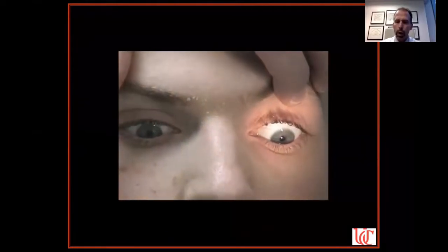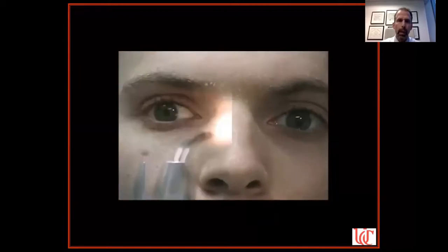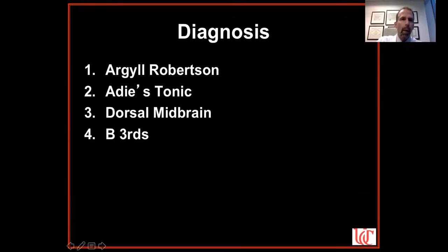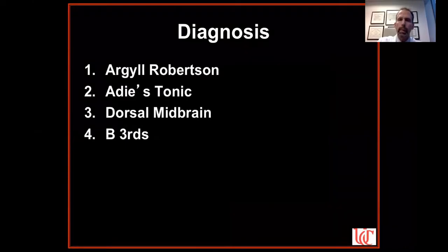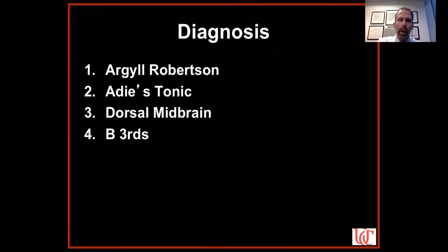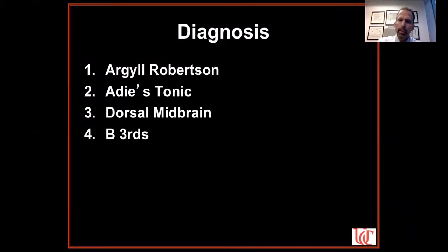This constellation of findings is our second polling slide. Does this represent Argyll-Robertson pupil? Adie's tonic pupil? A problem in the dorsal midbrain? Or bilateral third nerve palsies? Two-thirds of you said dorsal midbrain syndrome — exactly correct. It's true that Argyll-Robertson pupils and tonic pupils are causes of pupillary light-near dissociation, but those are isolated pupillary problems. Bilateral third nerve palsies are very unlikely to cause just elevation deficits, and you'd expect ptosis, not lid retraction.